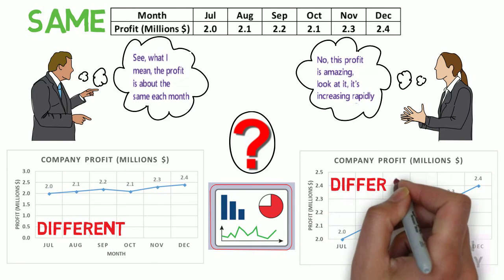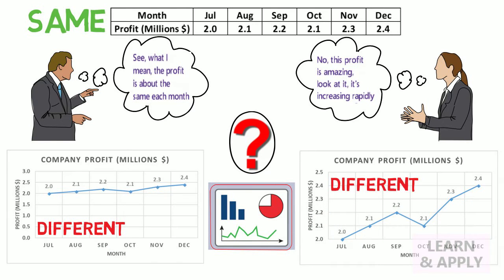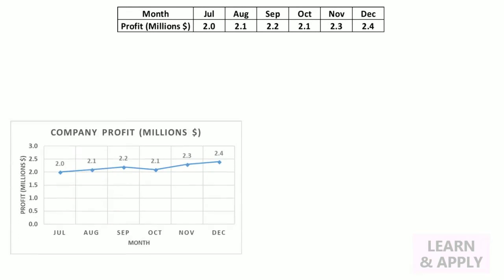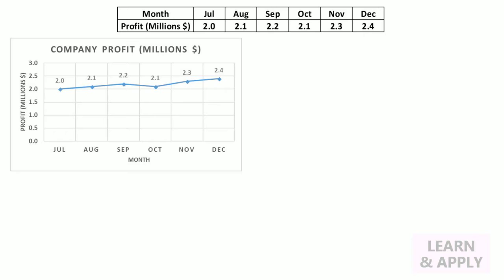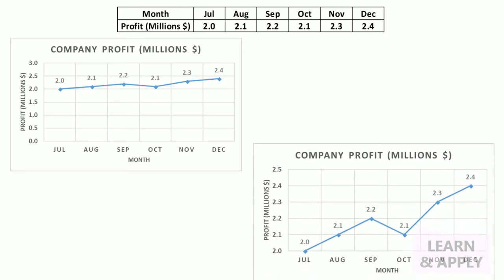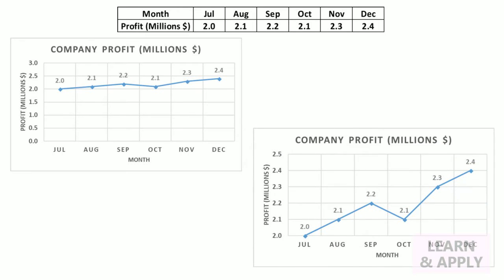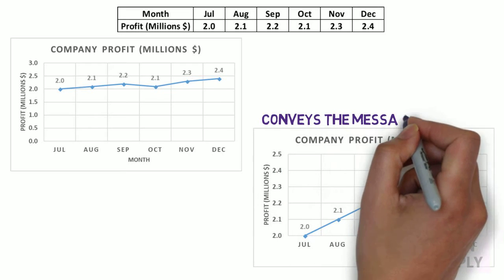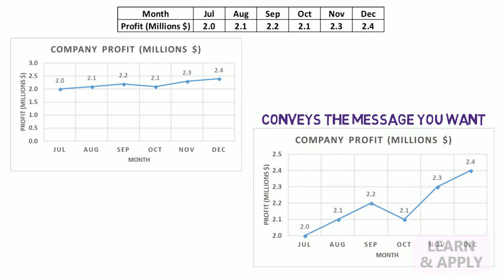Software can't think for you. Chart software can save you a lot of time and produce effective charts, but you still need to understand what is going on. At the end of the day, it's your data. And it's up to you to choose the right chart for the job and make sure your data is presented in the most effective way and convey the message you want. Software can translate data into chart, but it's up to you to make sure the chart is right.